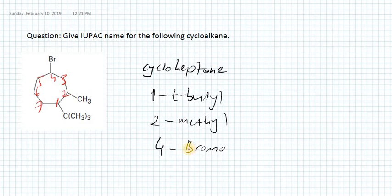Since they have the same initial letter, we have to look at the second letters. Bromo has R and butyl has U. So definitely we have to report bromo first.